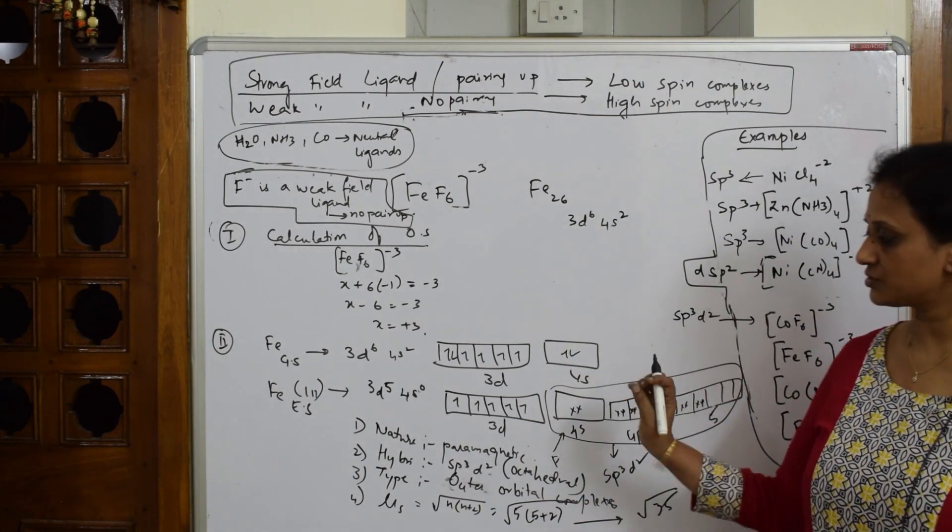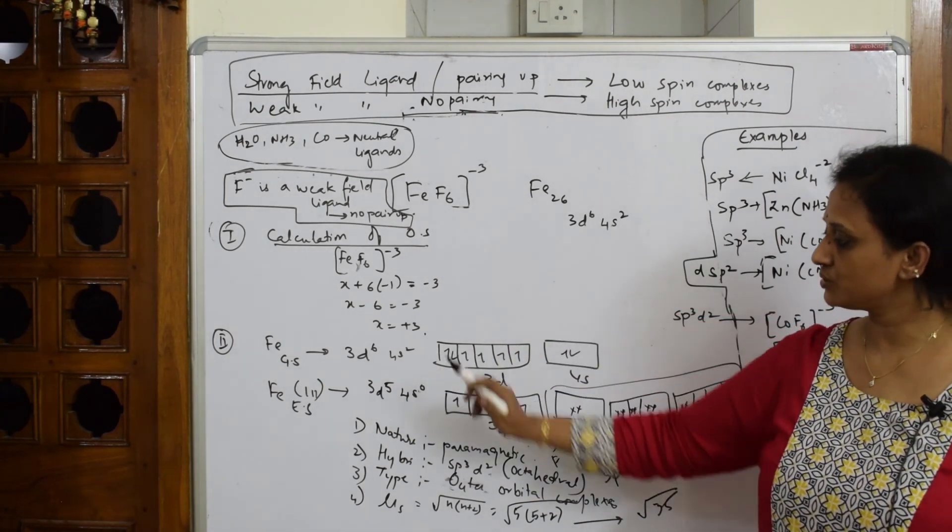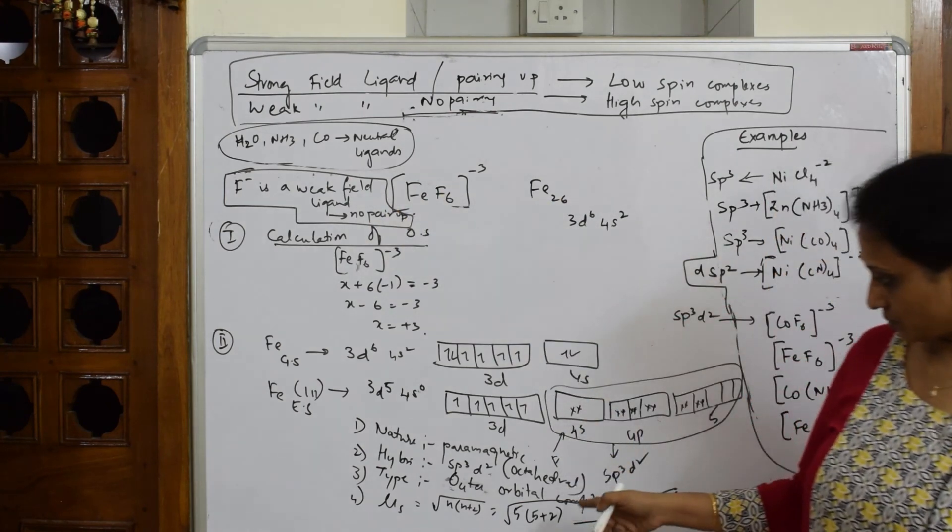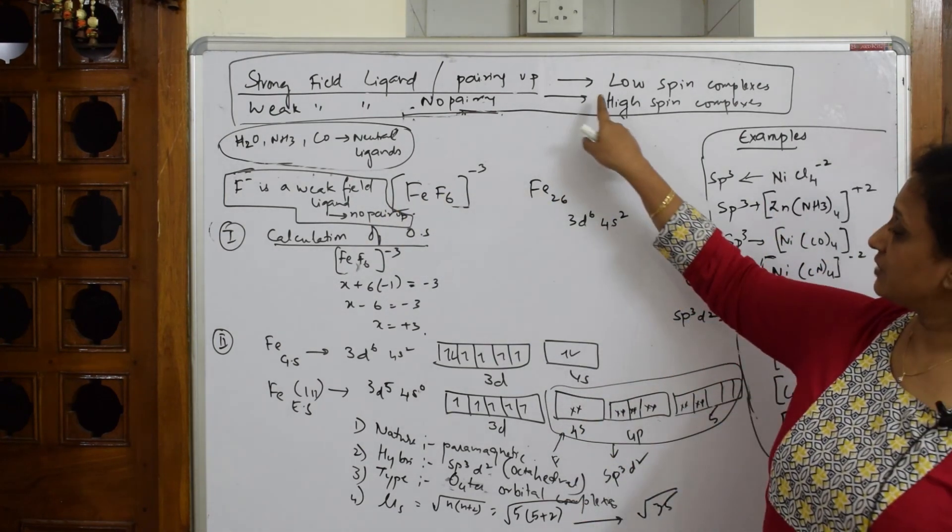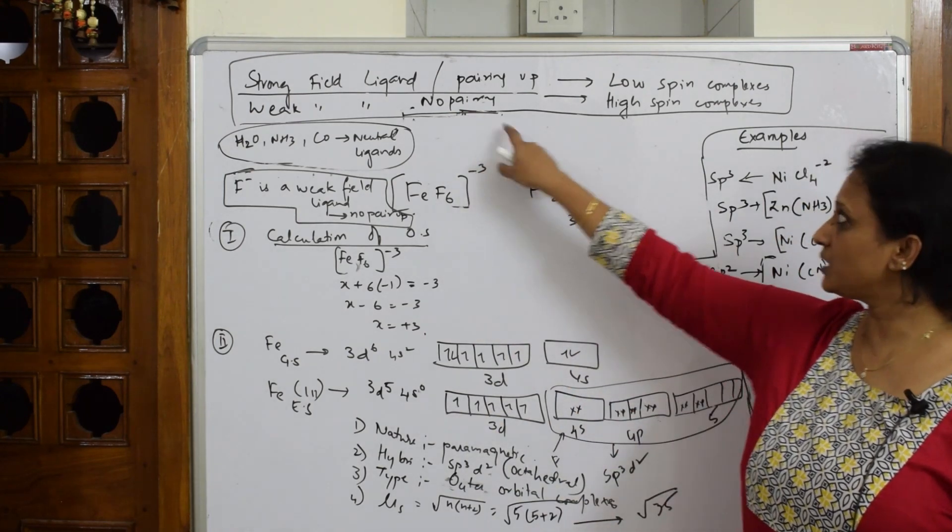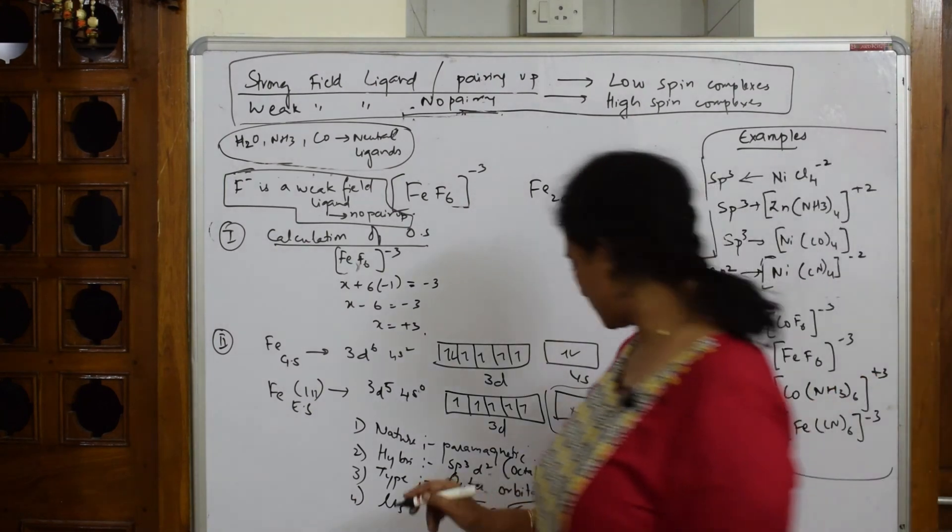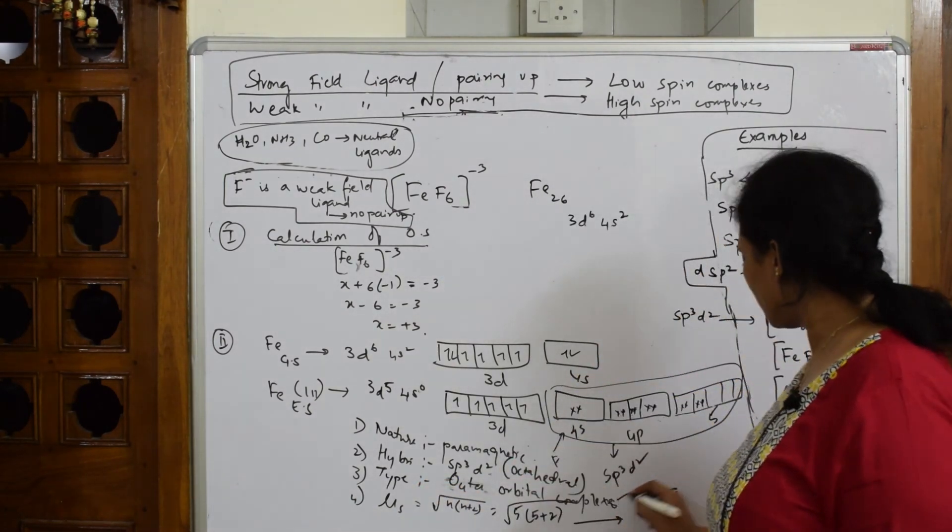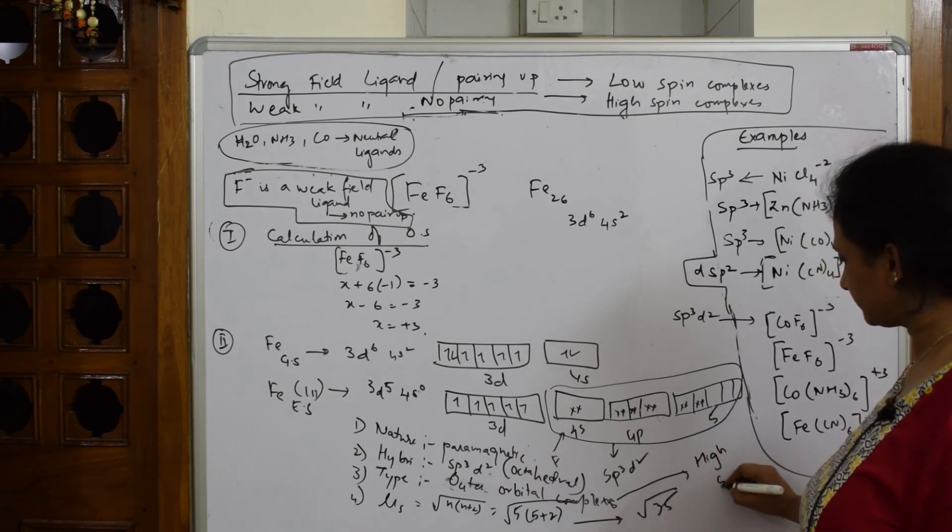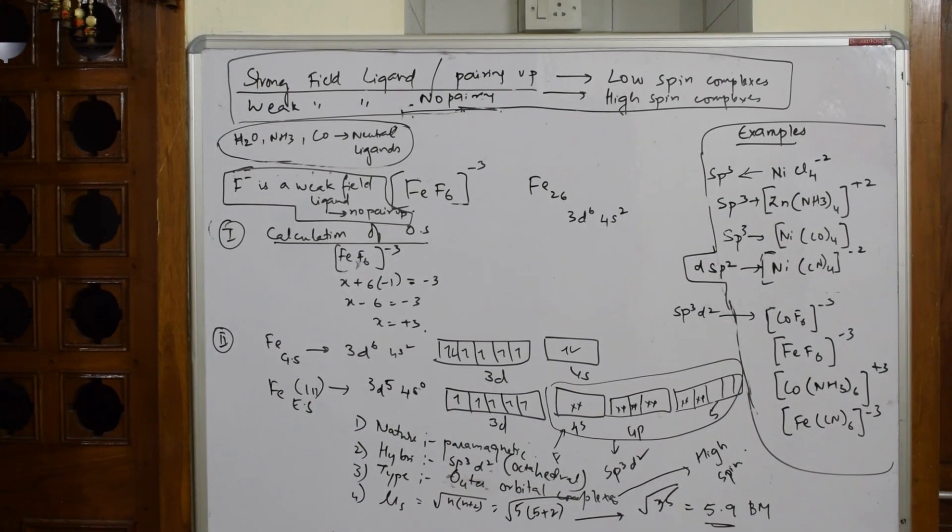So all the parameters are given. If you're careful, write everything. Step 1, step 2, step 3, step 4, this one and outer orbital complex. One more thing you have to write: whenever it is weak field ligand, I said no pairing occurs. If no pairing occurs, they are high spin complexes. So where should I write? I will write here: outer orbital complex and high spin complex. That's it.